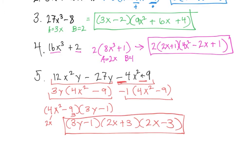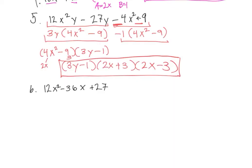So always look to see that your factors can be factored even further. Question 6: let's factor out the greatest common factor first. That would be 3, and we are left with 4x squared minus 12x plus 9.